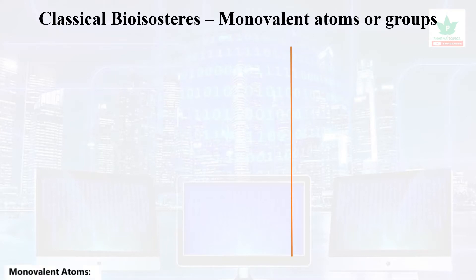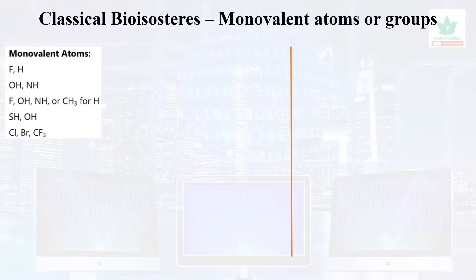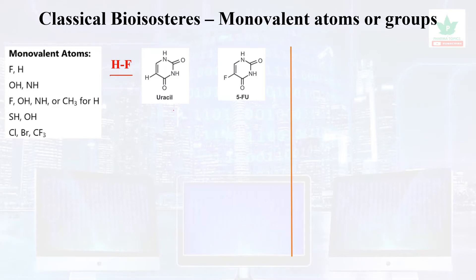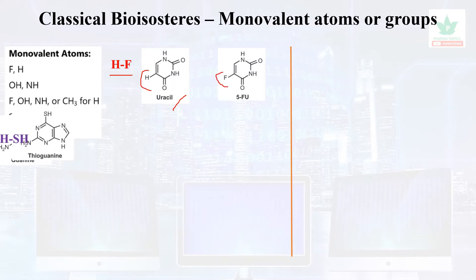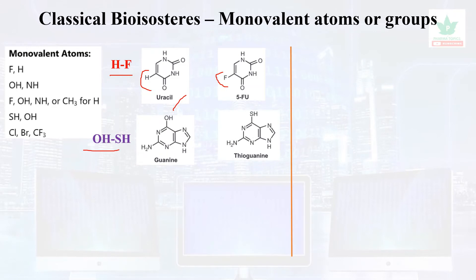Looking at classical bioisosteres: monovalent atoms and groups include fluorine, hydrogen, oxygen, SH, and chlorine. For example, the bioisosteric interchange of hydrogen with fluoride creates an anticancer compound. The interchange of OH with SH converts guanine into deoxyguanine, yielding an anticancer compound.